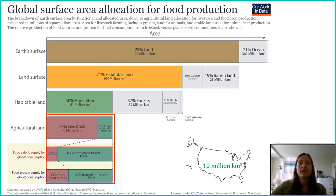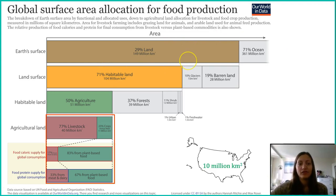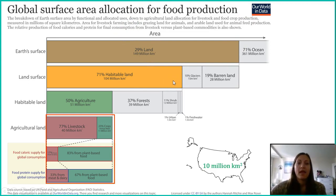Before we dive into the different issues surrounding agriculture, it's important to understand what land we're actually doing agriculture on. Only about 29% of Earth's surface is land — the rest is ocean. Of that land, about 70% is land we can actually live on. And of the land we can live on, half of it gets used for agriculture, which is actually quite impressive if you think about it.